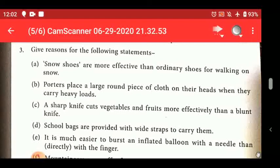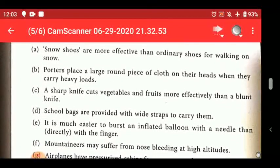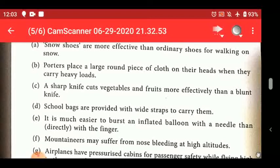Snow shoes are more effective than ordinary shoes for walking on snow. Why? Because snow shoes have large or flat soles. So that means more area in contact, so pressure will be less and the shoes won't sink in snow. Then second, porters place a large round piece of cloth on their head - again, so that surface area in contact increases and less pressure falls on their heads. Now a sharp knife cuts vegetables and fruits very effectively than a blunt knife. Why? Because less surface area. Sharp knife has less surface area than blunt. So pressure will increase. When pressure increases, then it will be easy to cut with a sharp knife. Then school bags are provided with wide straps so that less force falls on our shoulders. Because area of contact will increase, so pressure will decrease, then it will be easier to carry them.